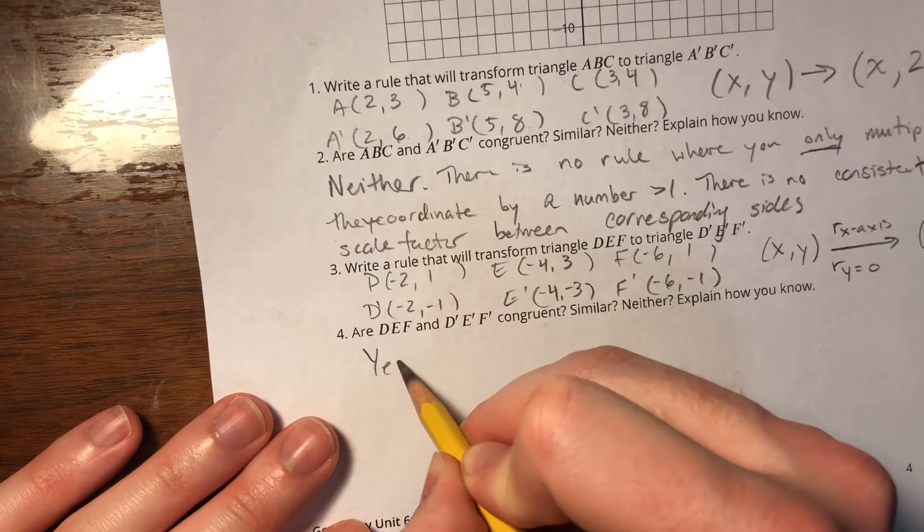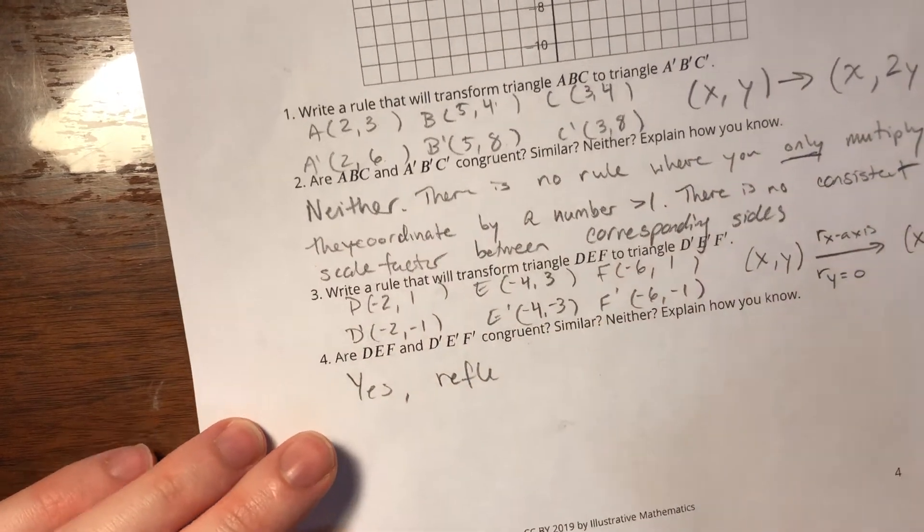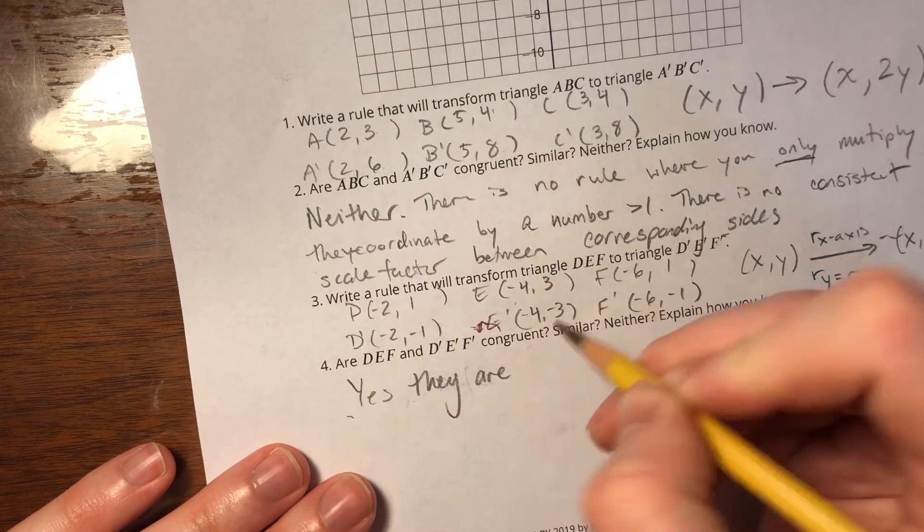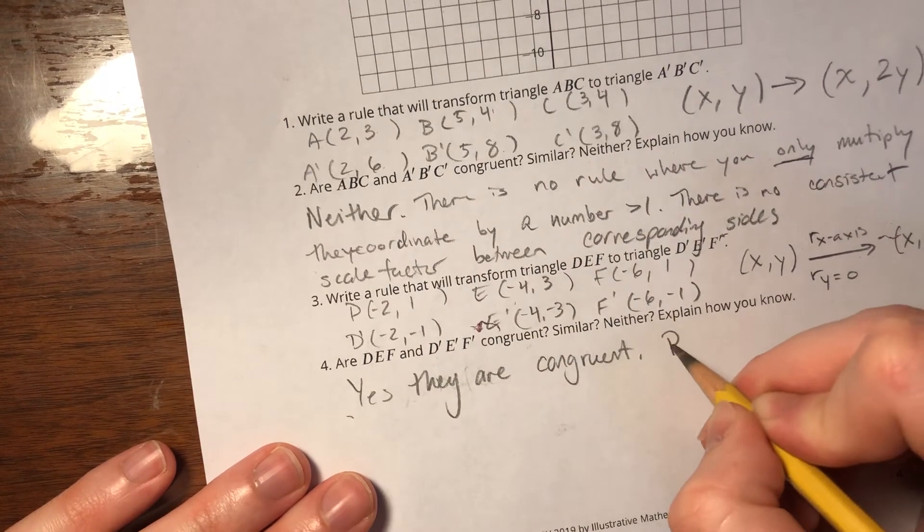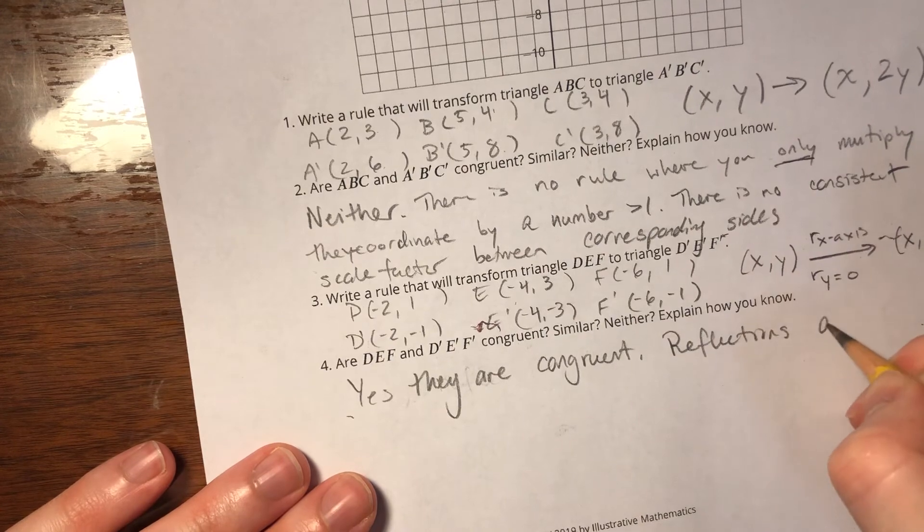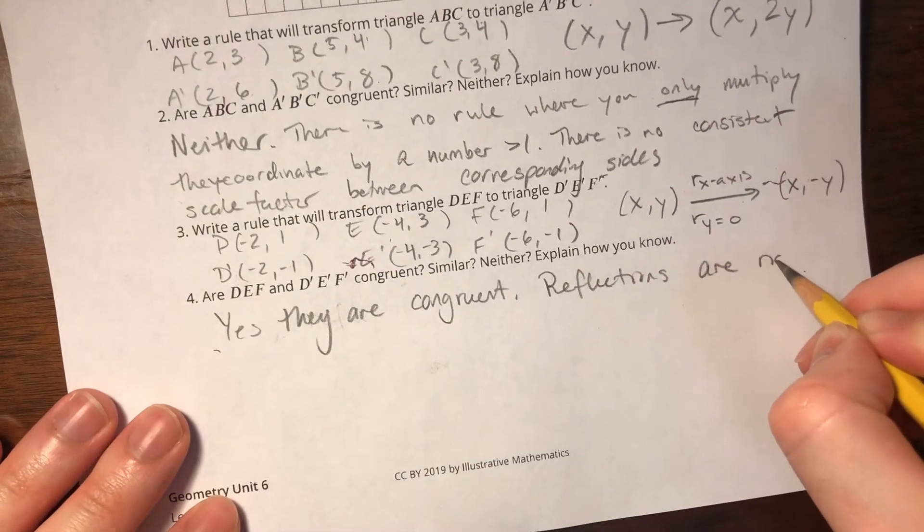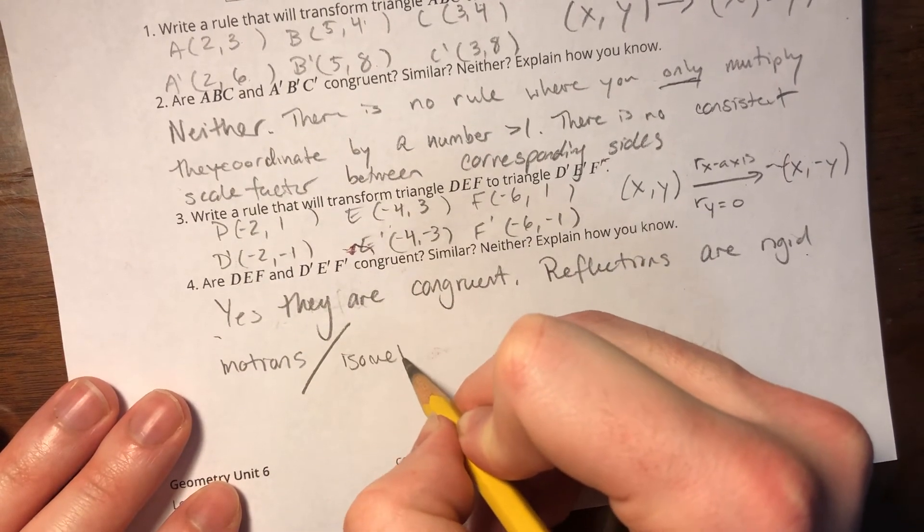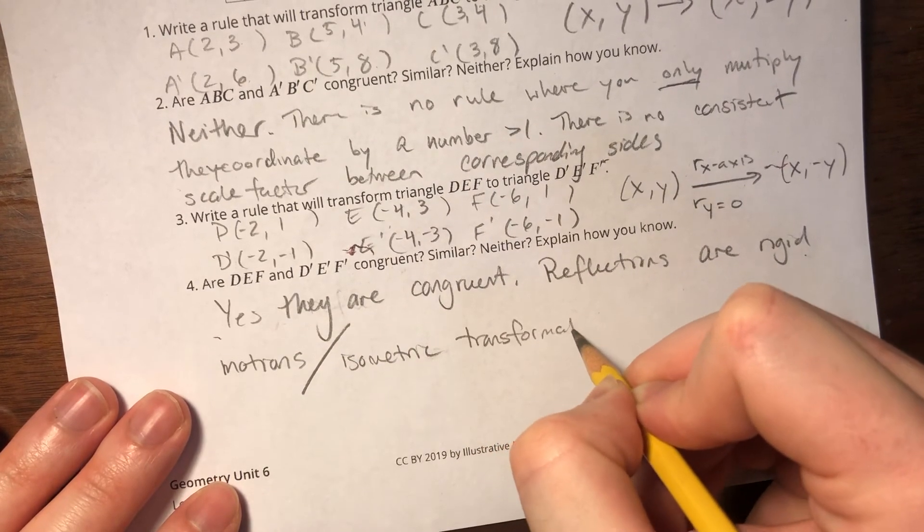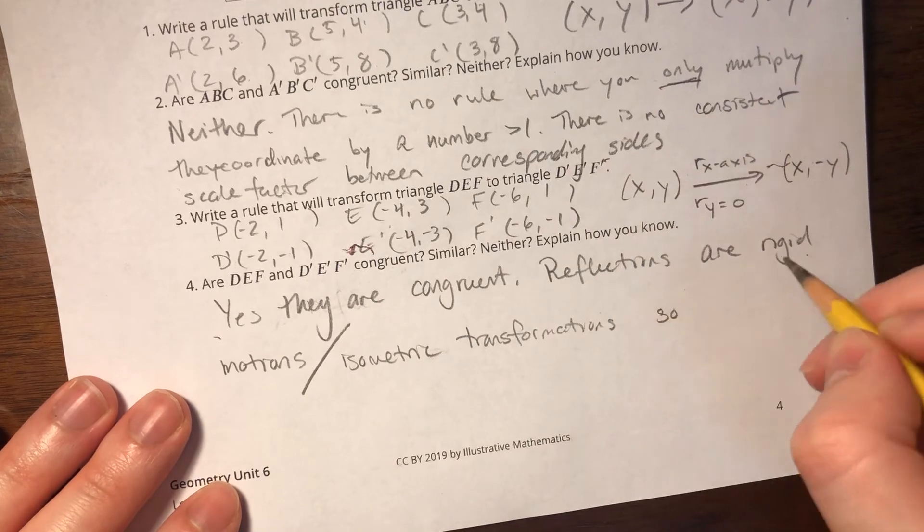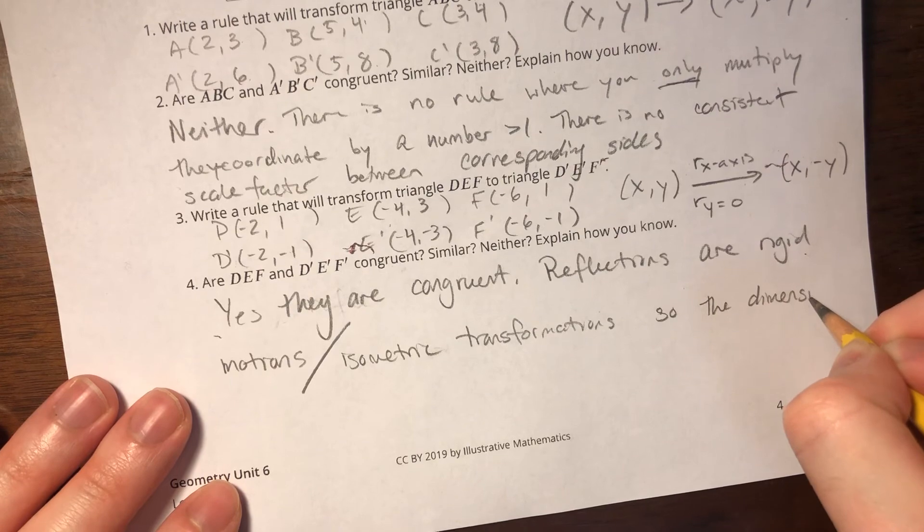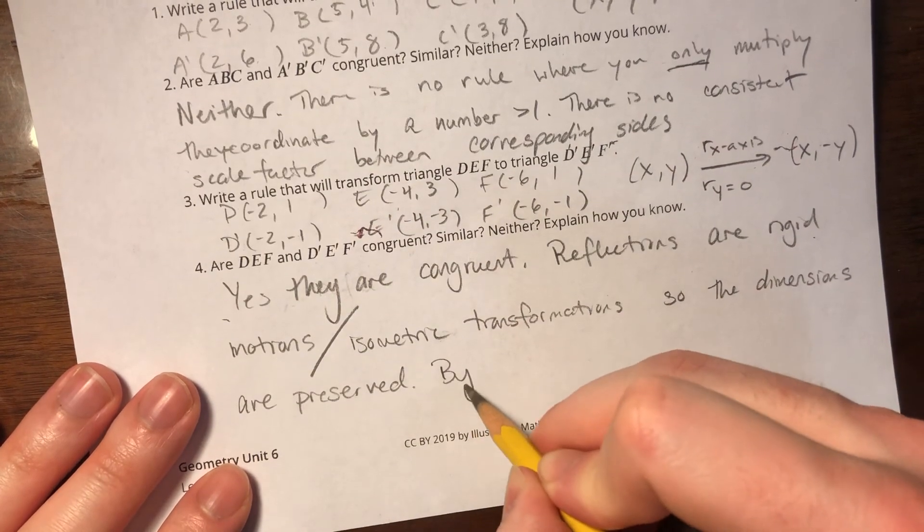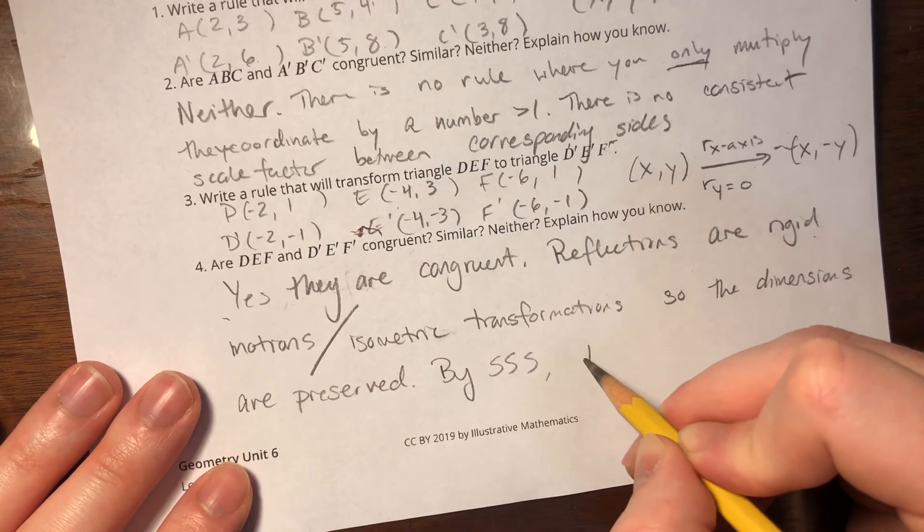Are they congruent? Yes. Reflections, oh, I should say yes congruent. Reflections are rigid motions. You could also say that they are isometric transformations. Reflections are rigid motions, so the dimensions are preserved. By SSS, the triangles are congruent.